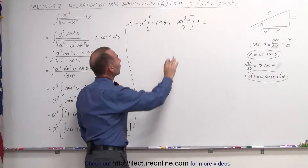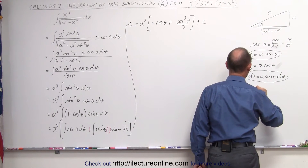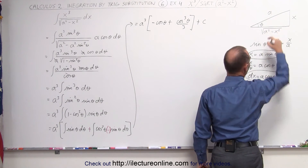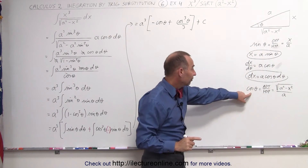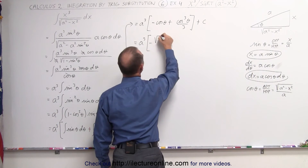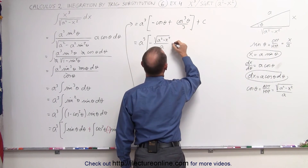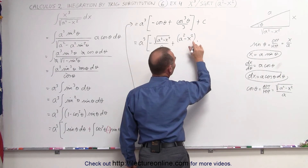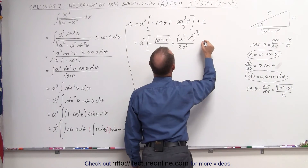Now we need to go back and replace these terms in terms of x and a. The cosine of theta, by definition, is the adjacent side divided by the hypotenuse. In this case, the adjacent side is the square root of a squared minus x squared, and the hypotenuse is a. This now becomes a cubed times: negative cosine of theta, which is the square root of a squared minus x squared divided by a, plus cosine cubed, which is that quantity to the 3 halves power — that is, a squared minus x squared to the 3 halves — divided by a cubed times 3, plus a constant of integration.